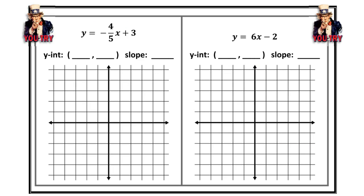On your own, try these two graphs. Identify your slope and y-intercept, plot your y-intercept, and then use your slope to find the next point. If it forces you to plot the second point off the graph, or if you want extra points in the opposite direction, take the opposite of your rise and run — if it's positive, make it negative; if it's negative, make it positive.